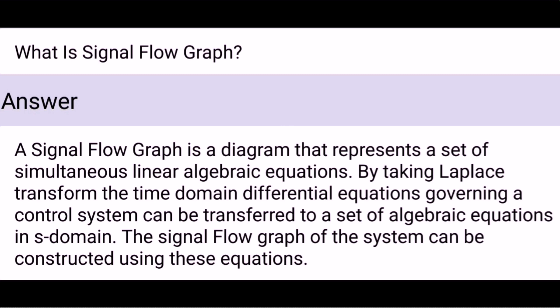What is a signal flow graph? A signal flow graph is a diagram that represents a set of simultaneous linear algebraic equations. By taking the Laplace transform, the time domain differential equations governing a control system can be transferred to a set of algebraic equations in the S domain. The signal flow graph of the system can be constructed using these equations.